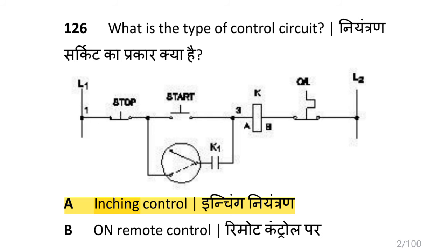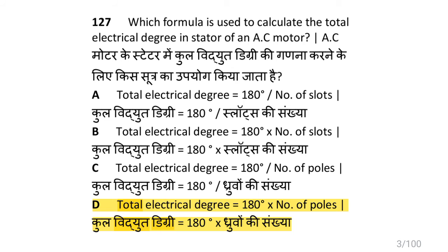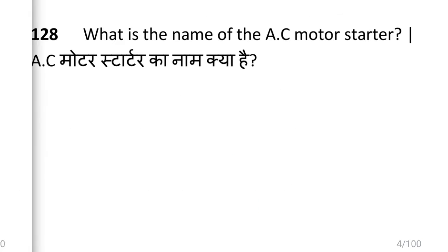The type of control circuit for inching control is inching control. The formula used to calculate the total electrical degrees in the stator of an AC motor is: total electrical degrees equals 180 degrees multiplied by the number of poles.